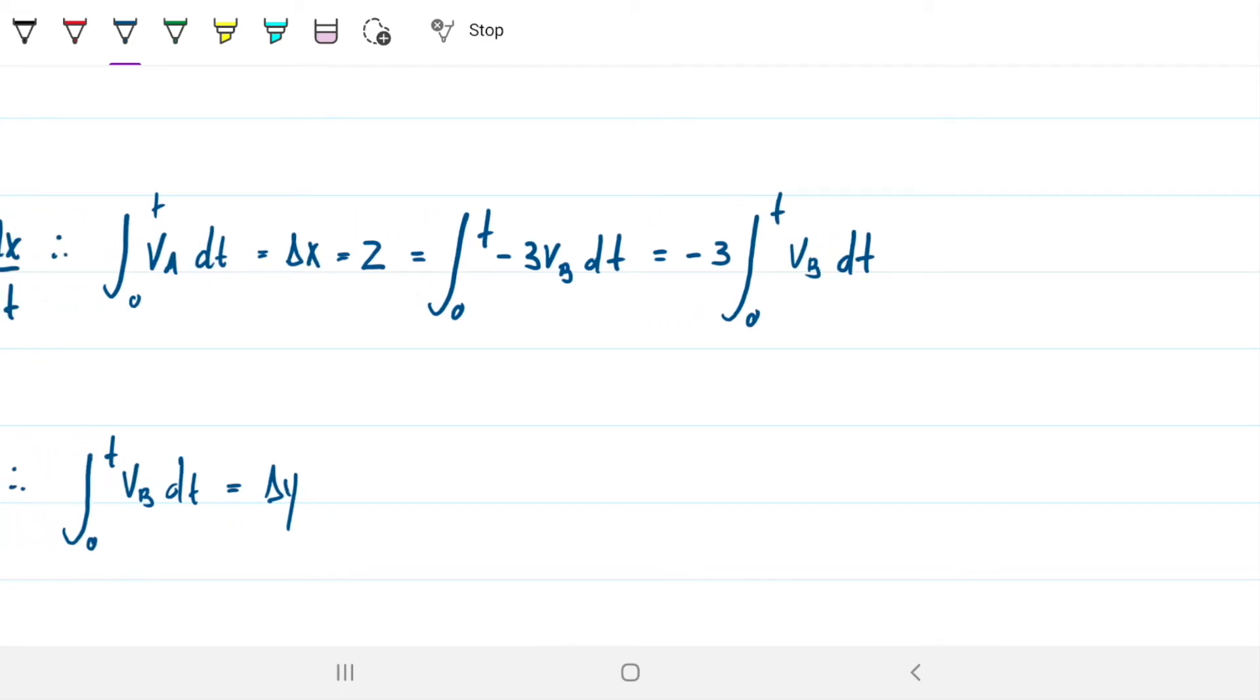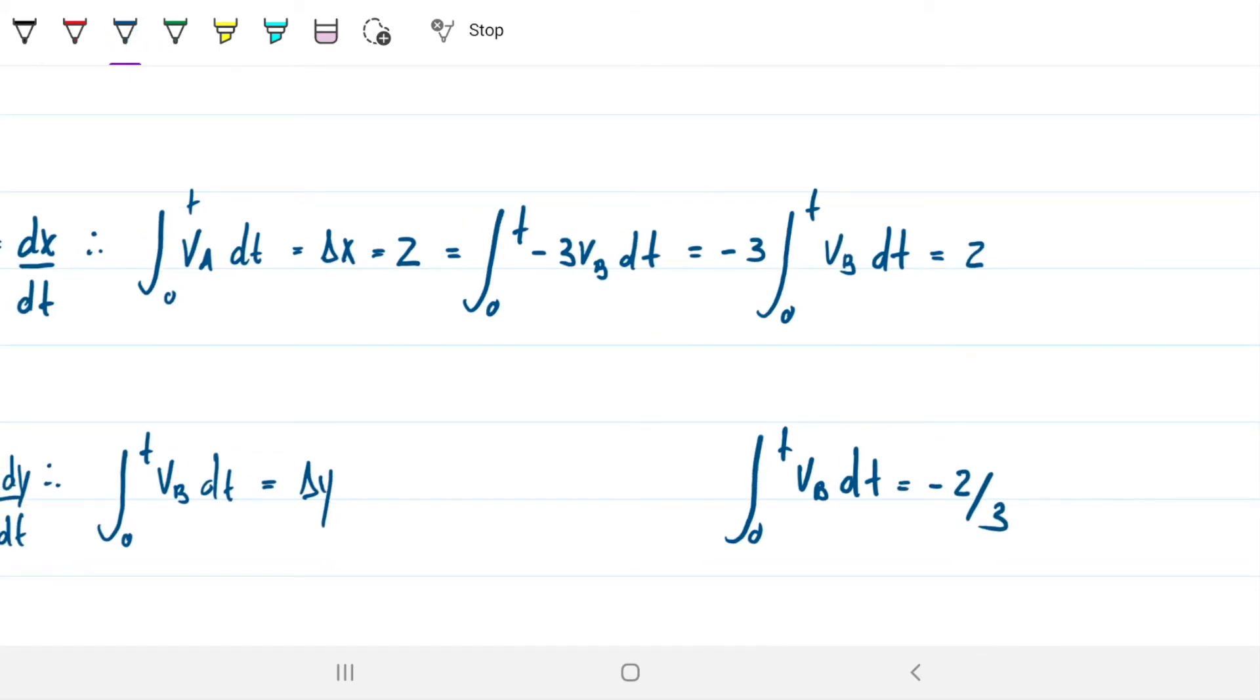So where I have va, I can just say this is equal to the integral from zero to t minus three vb dt. And because this is a constant, it comes out of the integral. So we're left with running out of space here. Probably not the best idea to use the same page as before. But so this, because it's a constant, this is just minus three, zero to t, vb dt. Cool. So this is equal to two. So therefore, the whole thing is equal to negative two thirds. So in other words, from zero to t, vb dt is equal to negative two thirds. And if you look closely, you'll see that this integral here is exactly the same as this integral here. So therefore, that means that this right here has to be exactly equal to this right here. So delta y is negative two thirds.